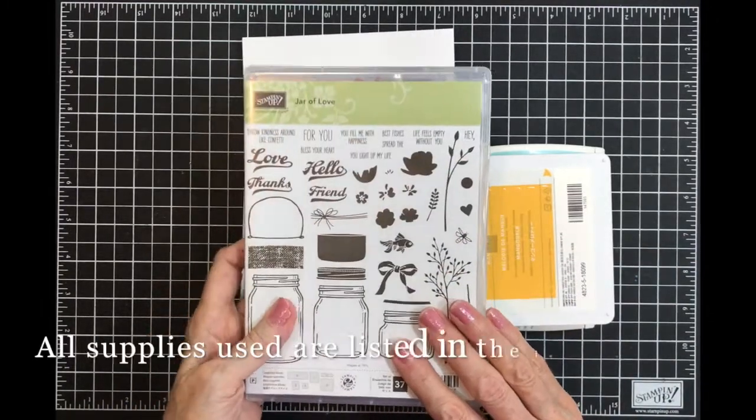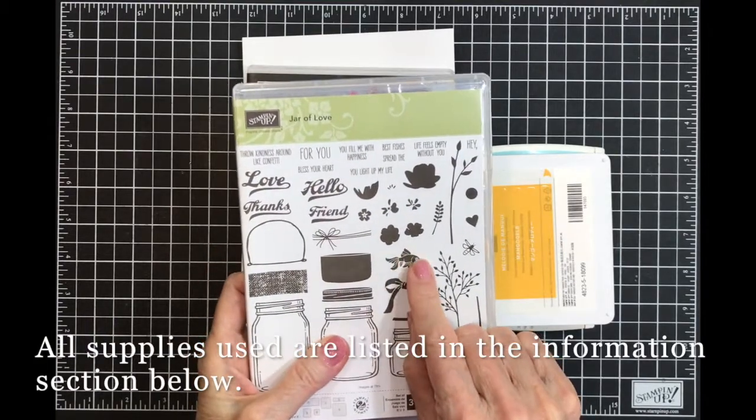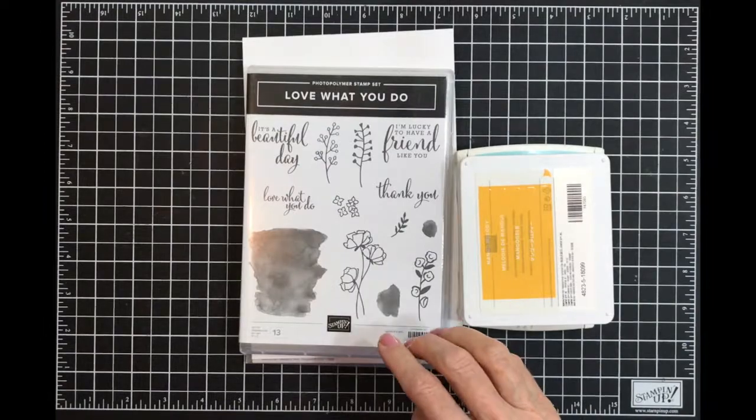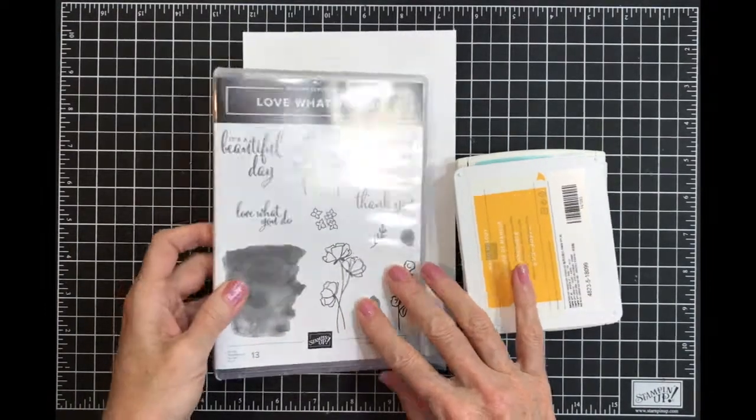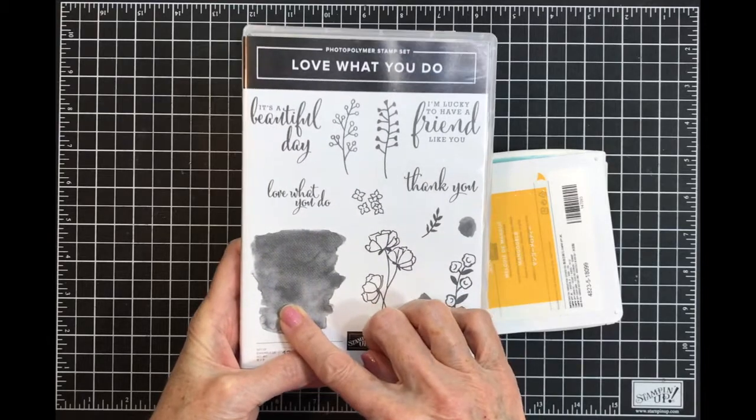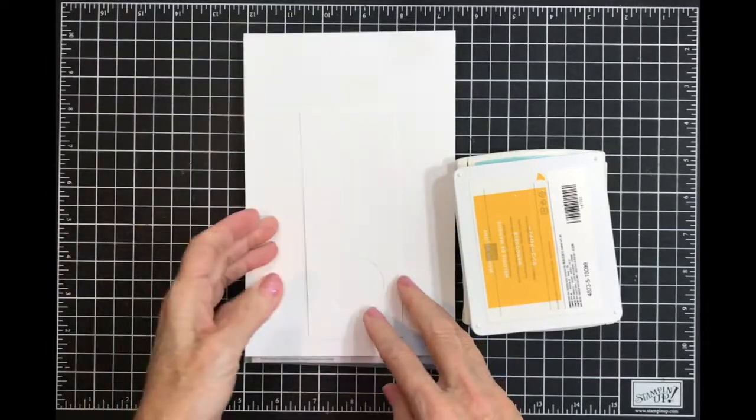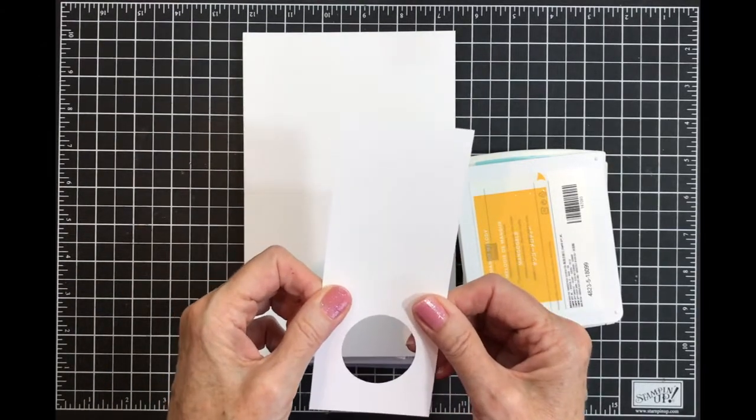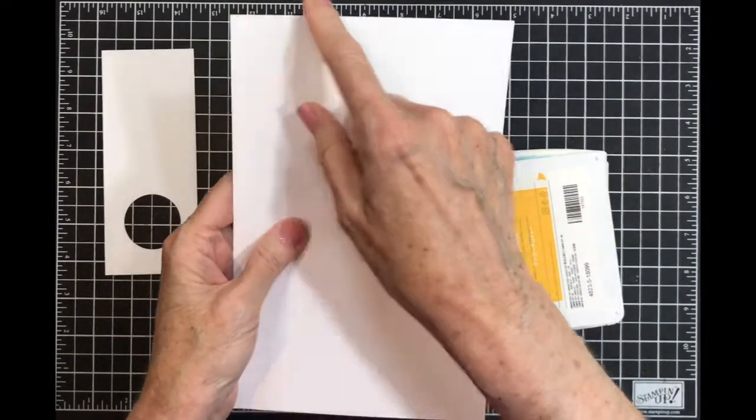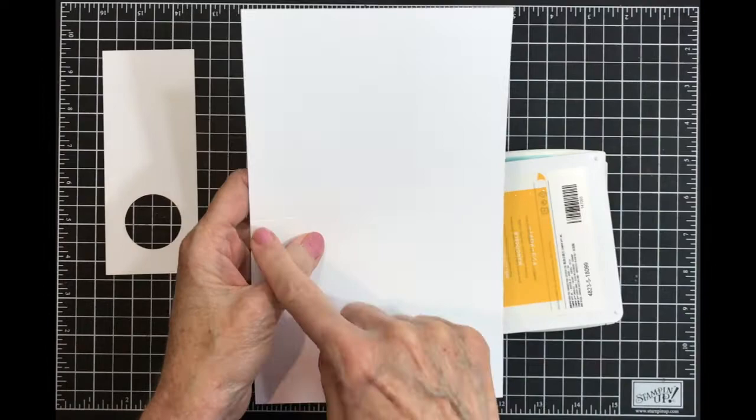For my card today I'm using Jar of Love, specifically the cute little fish and leaf spray. I'm also using the Love What You Do stamp set and this image from it. I have a scrap of Whisper White and my Whisper White card base that's 5.5 by 8.5 inches, scored at 4.25 inches.